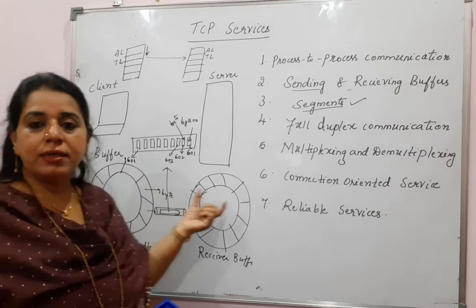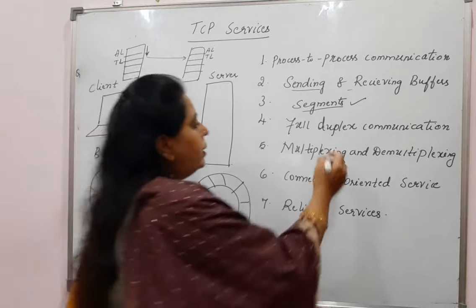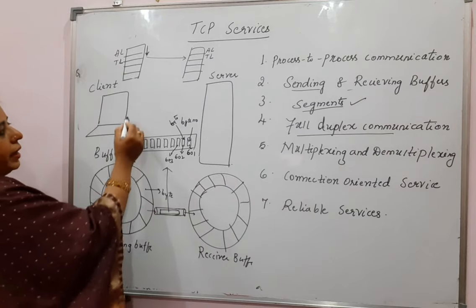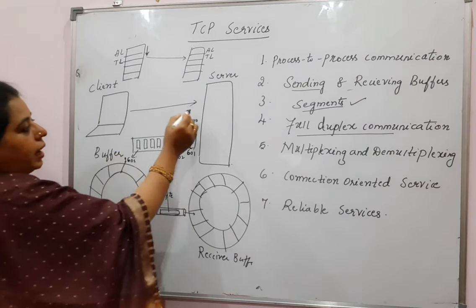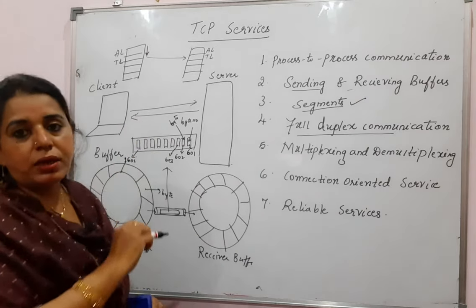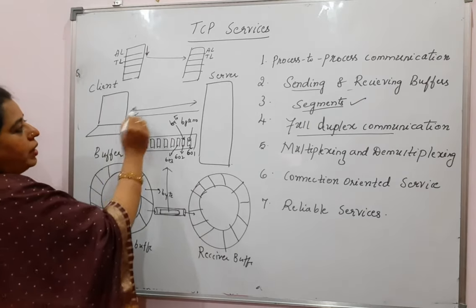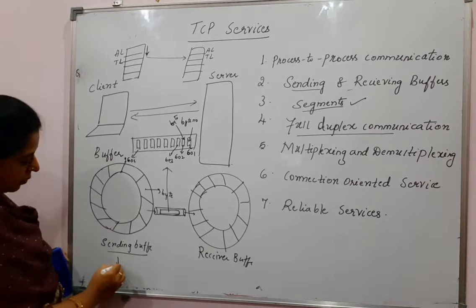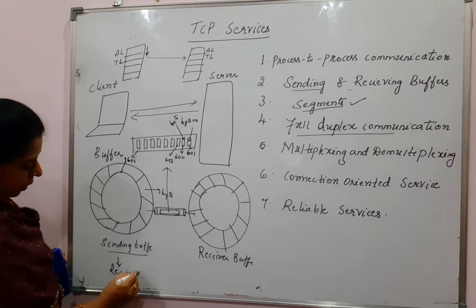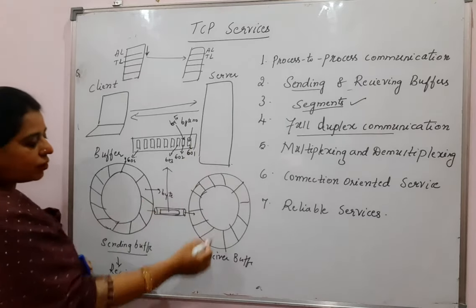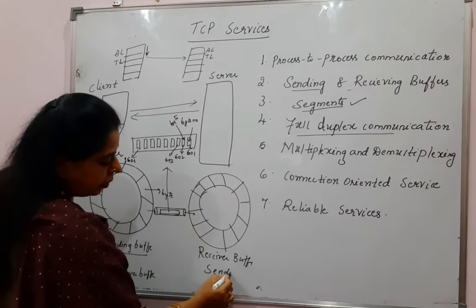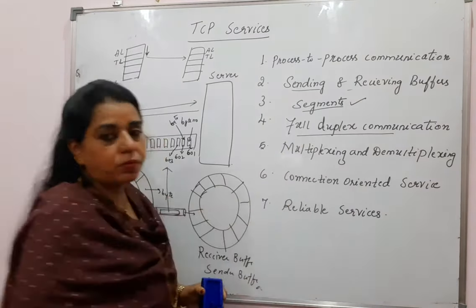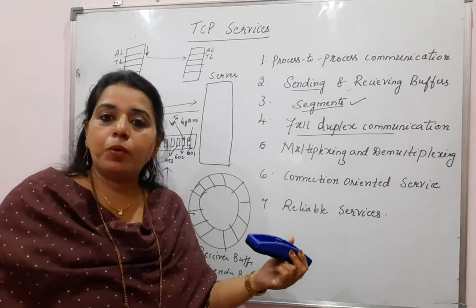Always remember that the data is transferred in the form of segments in Transmission Control Protocol. The next service is full duplex communication. In full duplex communication, data can be sent from the sender to the receiver, and at the same time the server can also send data to the sender. This means the client maintains a sender buffer and a receiver buffer, and the server also maintains both a receiver buffer and a sender buffer, because both can act as sender and receiver. It supports full duplex communication — data can be sent in both directions.